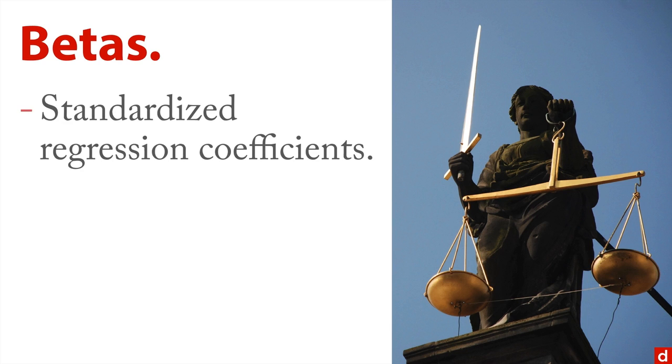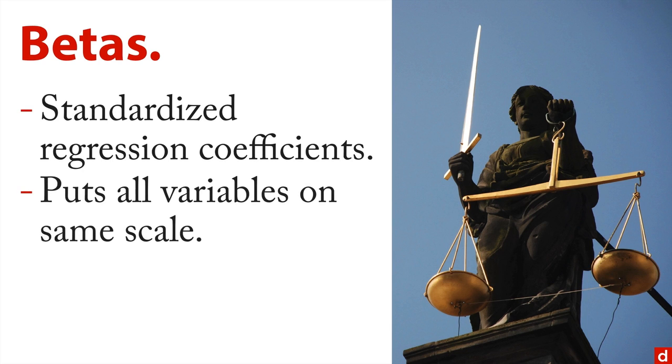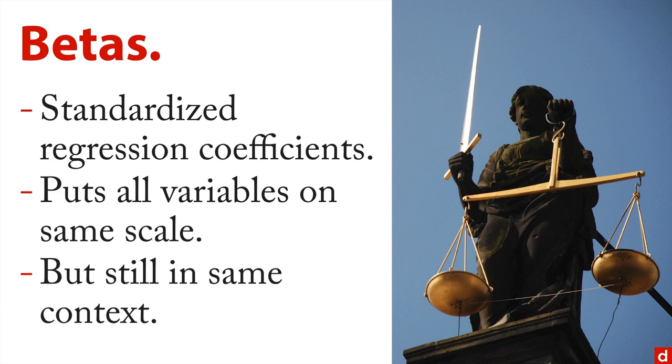A slightly better approach is to use betas or standardized regression coefficients. This is where you put all the variables on the same scale, usually standardized from zero and then to either minus one plus one or with a standard deviation of one. The trick is though, they're still in the same context of each other and you can't really separate them because those coefficients are only valid when you take that group of predictors as a whole.